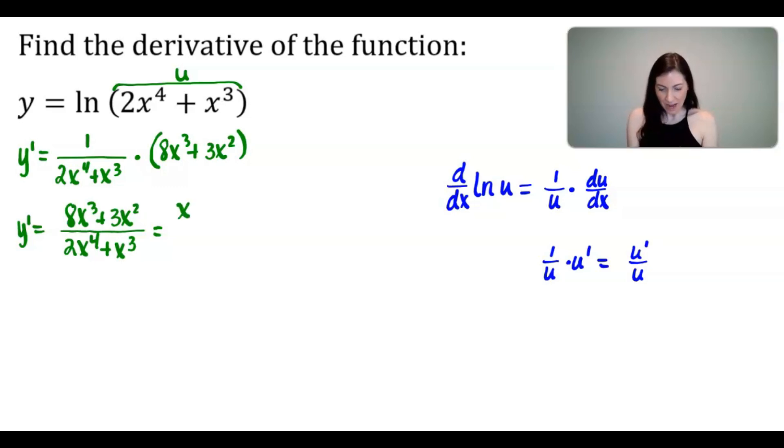In the numerator, I'm going to factor out a greatest common factor of x squared, which would give me x squared times 8x plus 3. And in the denominator, I'm going to factor out also an x squared. Now I know I could factor out an x cubed, but then I know all I will be able to cancel is only the x squared. So I'm going to just factor out the x squared in the denominator, because that's all I will be able to cancel. And so those would go away, and I would get a final simplified answer of 8x plus 3 divided by 2x squared plus x.